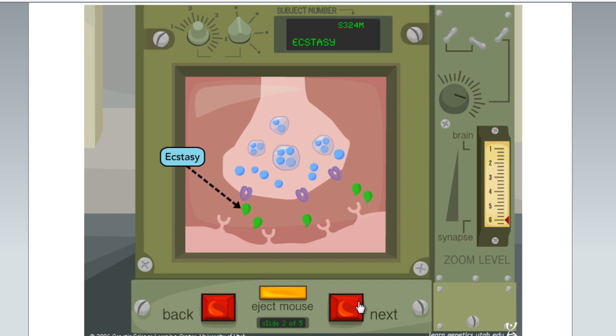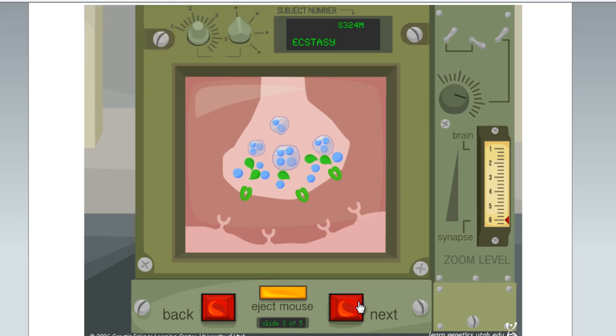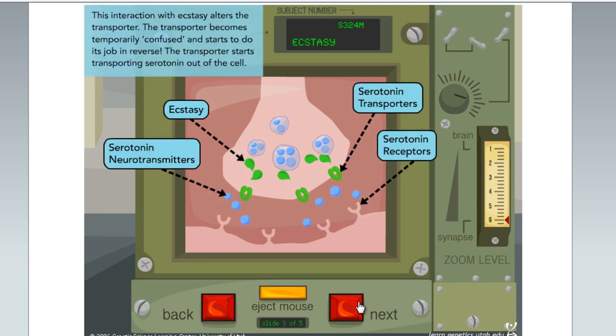Ecstasy mimics serotonin and is taken up by serotonin transporters. In fact, ecstasy is more readily taken up than serotonin itself. This interaction with ecstasy alters the transporter. However, the transporter becomes temporarily confused and starts to do its job in reverse. The transporter starts transporting serotonin out of the cell.